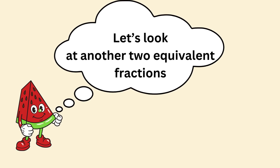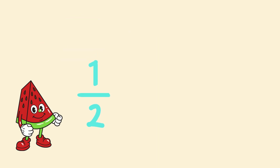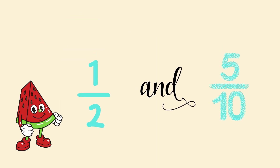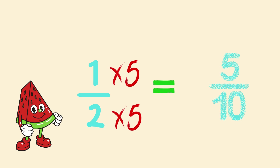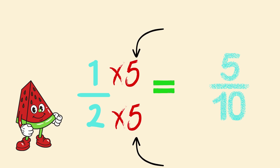Let's look at another two equivalent fractions that we identified earlier. For example, one-half and five-tenths. Notice that to turn one-half into its equivalent fraction five-tenths, we can multiply the numerator and denominator of the fraction one-half by five. The key thing to remember is that when we want to create an equivalent fraction, we must multiply both the numerator, the top number, and the denominator, the bottom number, by the same value. This keeps the value of the fraction the same.